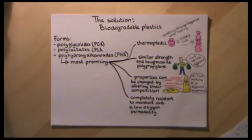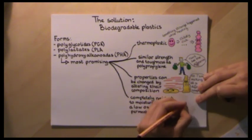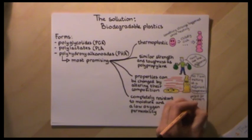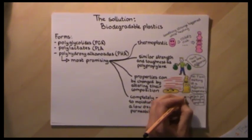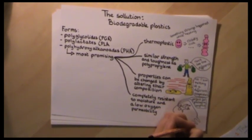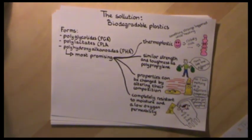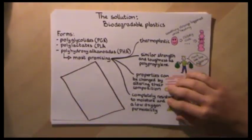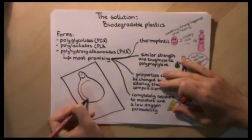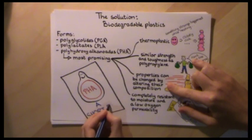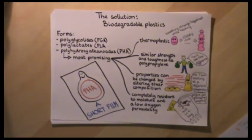which is the second most common plastic after polyethylene, because their properties can be changed by altering their composition, and because they are completely resistant to moisture and have very low oxygen permeability.